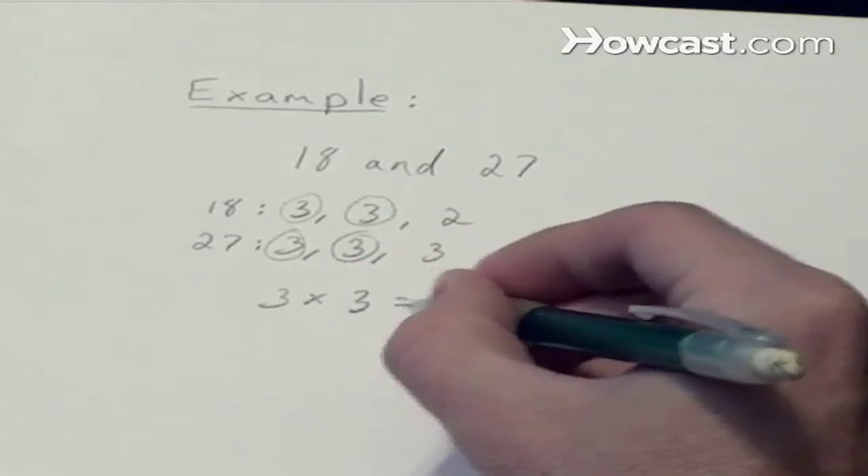The primes of 27 are 3, 3, and 3. So the greatest common factor is 3 times 3, or 9.